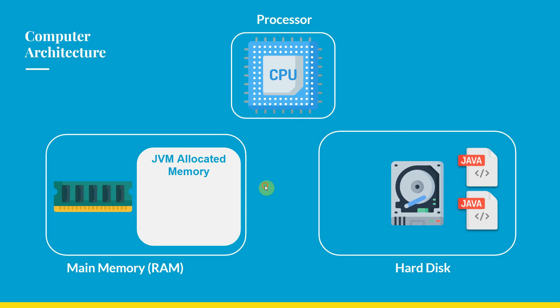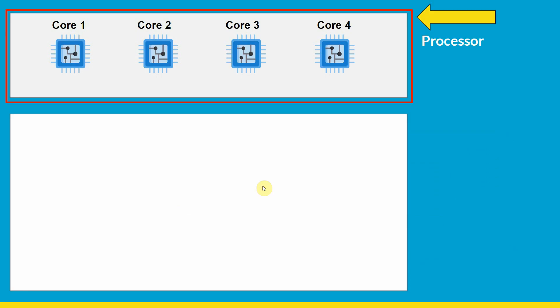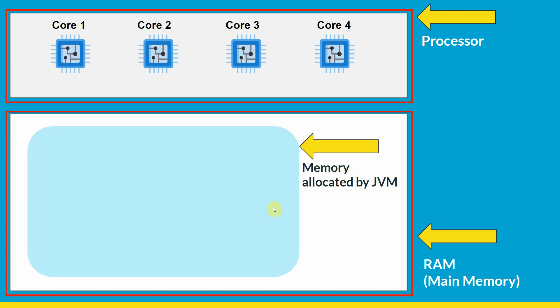For this video we are only going to see the interaction between processor and RAM. The first rectangle represents the processor, which has multiple cores — you might have heard about dual core, octa core, quad core processors. A single processor can have multiple cores; one core is capable of running one thread at a time. This is a quad core processor, so it can parallelly execute four threads. The rectangle below represents RAM, where JVM has allocated some memory for our Java program.